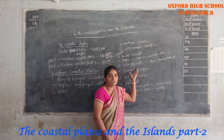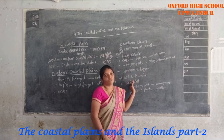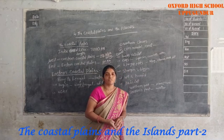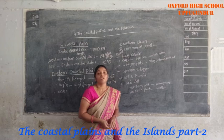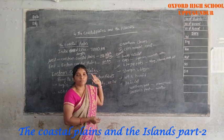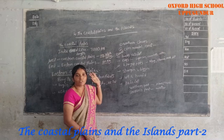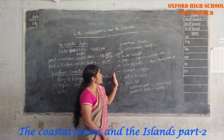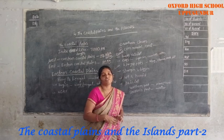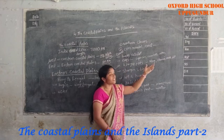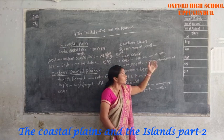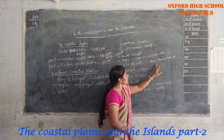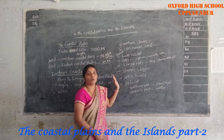In the Eastern Coastal Plains, there are three largest ports. In the Western Coastal Plains, Mumbai is the famous port. In the Eastern Coastal Plains, the three largest ports are Visakhapatnam, Chennai, and Paradip. These are the three important ports in the Eastern Coastal Plains.